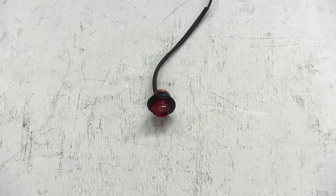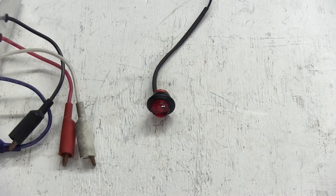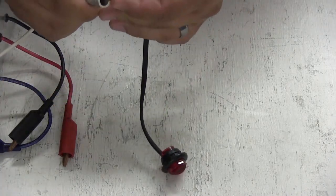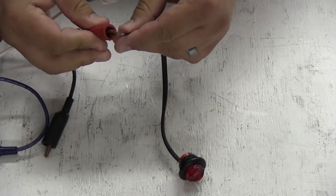Next we're going to hook the light up to a power supply so you can see how it looks. We'll connect the white to ground and black to power.